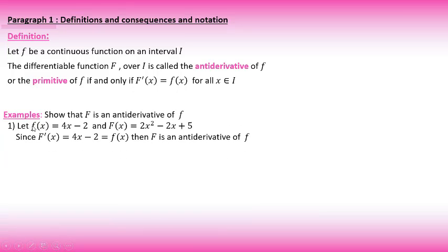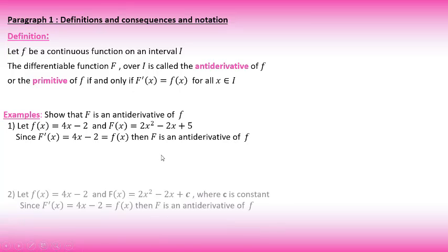Example number one: small f(x) = 4x − 2 and capital F(x) = 2x² − 2x + 5. We take the derivative of capital F: derivative of 2x² is 4x, derivative of −2x is −2, derivative of 5 is 0. Then capital F′ equals small f(x). As a conclusion, capital F is called the antiderivative of small f.